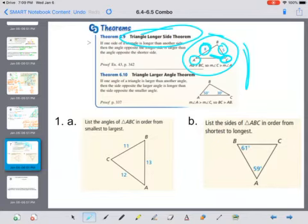So if I look at number 1, if I list the angles of the triangle in order from smallest to largest, the smallest side is 11. So the smallest angle is angle A.